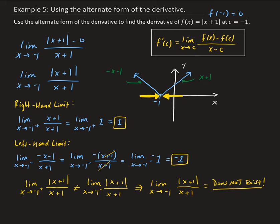Since the limit doesn't exist, the derivative of the absolute value of x plus 1 evaluated at negative 1 does not exist — it's undefined. To summarize: using the alternate form of the derivative for the function absolute value of x plus 1, we computed the right-hand and left-hand limits and found they are not equal. Therefore, the overall limit doesn't exist, which implies the derivative evaluated at negative 1 is undefined.